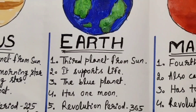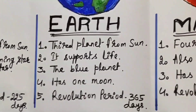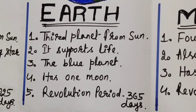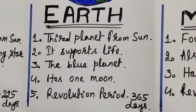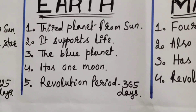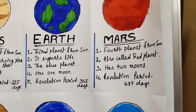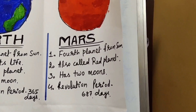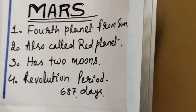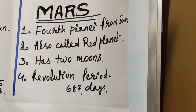The third one is Earth. It is the third planet from the sun and it supports life. It is the blue planet because 70 percent of Earth is covered with water. It has only one moon, and the revolution period is 365 days. Next we have Mars, the fourth planet from the sun, also called the red planet. It has two moons and the revolution period is 687 days. It is called the red planet because the soil and rocks present on Mars are red in color.